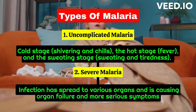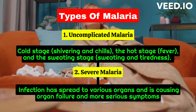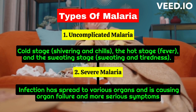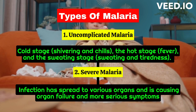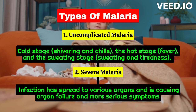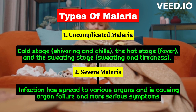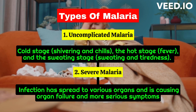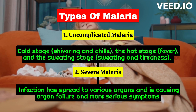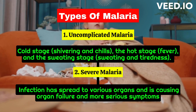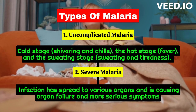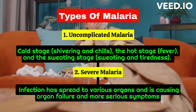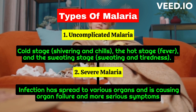The symptoms of malaria can be divided into two categories. Uncomplicated malaria: the malarial fever attack consists of the cold stage — shivering and chills — the hot stage — fever — and the sweating stage — sweating and tiredness. Typically, an attack lasts for six to ten hours and repeats on the second day when the infection is caused by P. falciparum, P. vivax, and P. ovale.